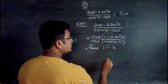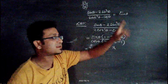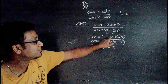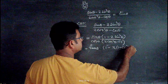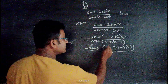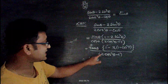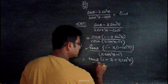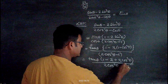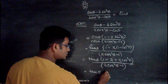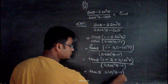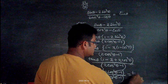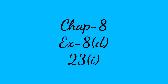Taking sinθ common from numerator: sinθ(1 - 2sin²θ). Since 1 - 2sin²θ can be expressed using sin²θ = 1 - cos²θ, we get 1 - 2(1 - cos²θ) = 2cos²θ - 1. Taking cosθ common from denominator: cosθ(2cos²θ - 1). The (2cos²θ - 1) terms cancel, giving sinθ/cosθ = tanθ, which is the required right-hand side.